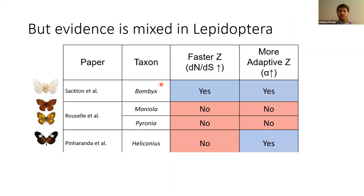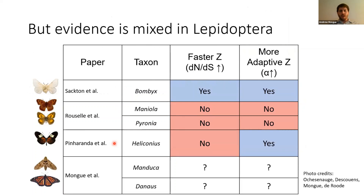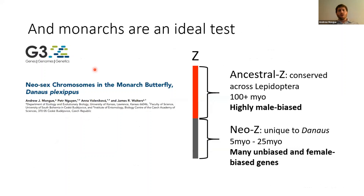When we look at the evidence to date in butterflies and moths, we see really little consistency for either of these predictions, but we've only sampled four species so far. Today I'm going to add another two: Manduca sexta, the Carolina sphinx moth, and Danaus plexippus, the monarch butterfly, and try to get more insights into what's happening with sex chromosomes in Lepidoptera. Monarchs in particular are an interesting test case because they have neosex chromosomes — their Z chromosome is made up of what I'll call an ancestral portion.